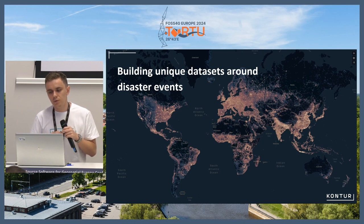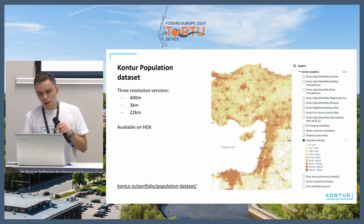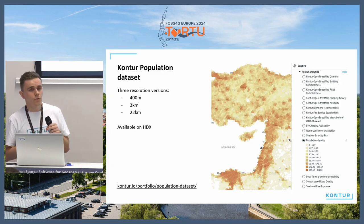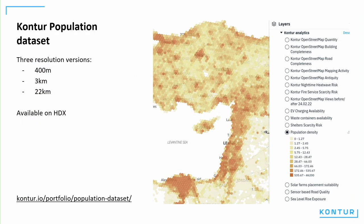We use GeoSynth especially to build datasets. We have two open datasets that we publish for free: the Population dataset and Administrative Boundaries. Our Population dataset, currently version 5, is built on the H3 grid system and is available for free at 8 resolutions for the entire world on Humanitarian Data Exchange. We also load a downsized version at 3 kilometers and 22 kilometers. From version 3, we published small files with extractions for any country, so you don't need to download the big dataset for the entire world — you can just download the extraction.